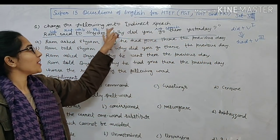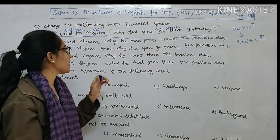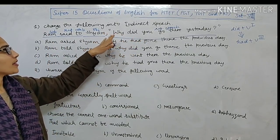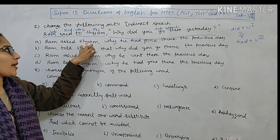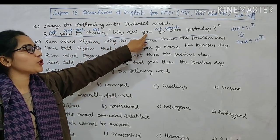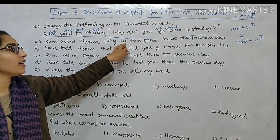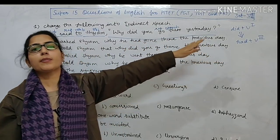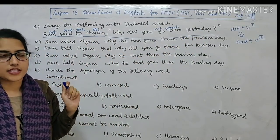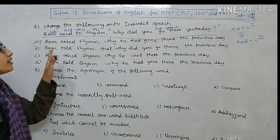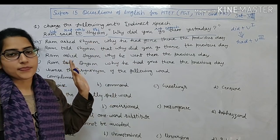The pronoun 'you' will change to 'he' since Shyam is the object. So the sentence becomes: Ram asked Shyam why he had gone there the previous day — 'yesterday' changes to 'the previous day'. That is option A, which is the correct answer in indirect speech.